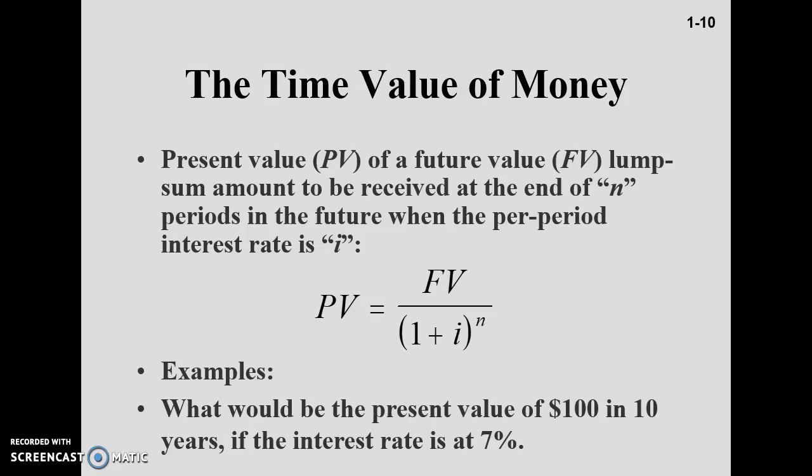Two key variables are involved: n, the future time period (one, two, three, or more years), and i, the interest rate. The formula to convert present value to future value — or future value to present value — is: PV = FV / (1 + i)^n, where i is the interest rate and n is the number of years.